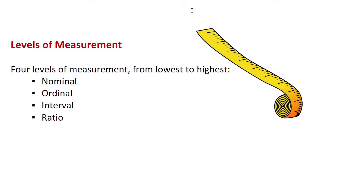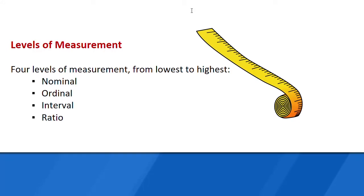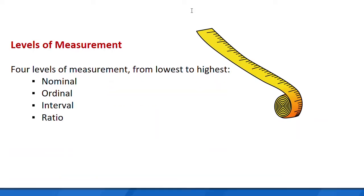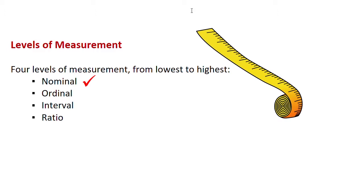A characteristic of data is the level of measurement, and that's what determines which statistical calculations are going to be useful and meaningful. There are four levels of measurement in order from the lowest to the highest: nominal, ordinal, interval, and ratio.